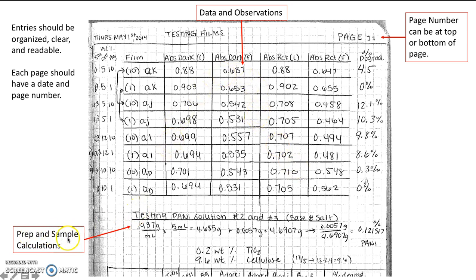You should also include any prep and sample calculations. So if you need to prepare calculations before your lab to determine a concentration of a solution or anything like that, you can do those in your notebook. You should also keep a record of the equations and a sample calculation for each thing that you do there. Again page numbers should be on every page, but it can be at the top or at the bottom, whatever you prefer.